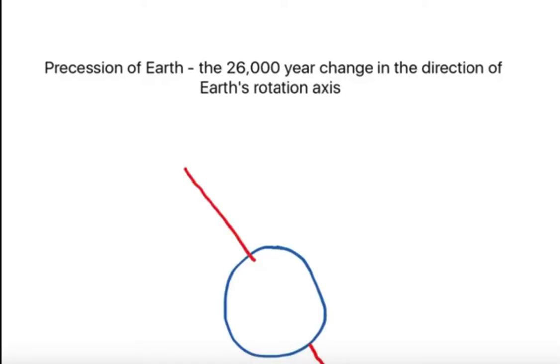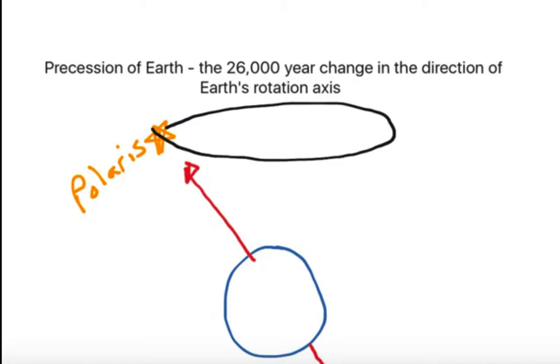Earth's north rotation axis is currently pointing to a yellow star called Polaris. But not always will the north rotation axis point to our north pole star. In fact, in 26,000 years, the rotation axis points to different stars. So if I were to draw this in, it would look something like this.